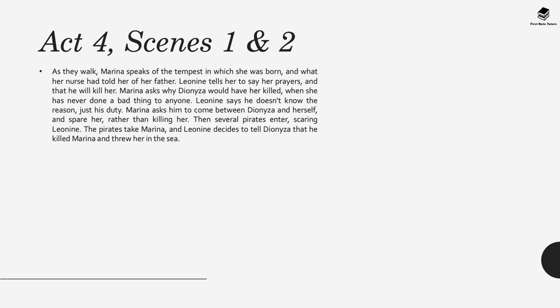Marina asks why Dionysa would have her killed when she has never done a bad thing to anyone. Leonine says he doesn't know the reason — it's just his duty. Marina asks him to spare her rather than kill her. Then several pirates enter, scaring Leonine. The pirates take Marina, and Leonine decides to tell Dionysa that he killed Marina and threw her in the sea.